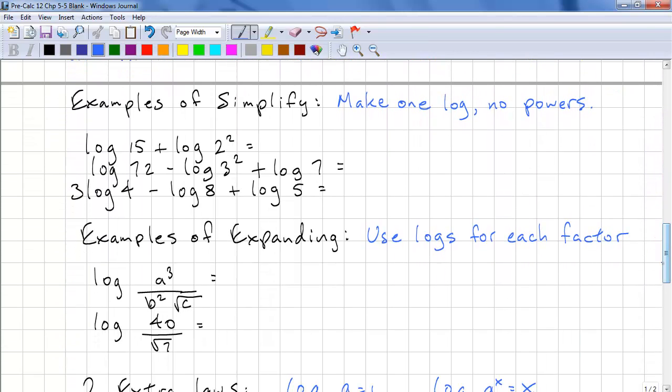Now, let's look at some sample problems that you might run across. We'll need to simplify to make one log without any powers. This is log 15 times 2 to the power of 2, which is log 15 times 4, which is log 60.